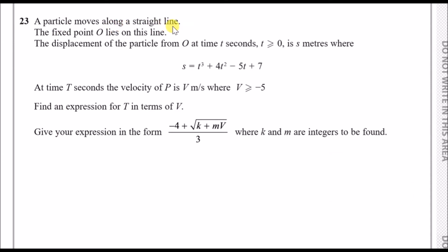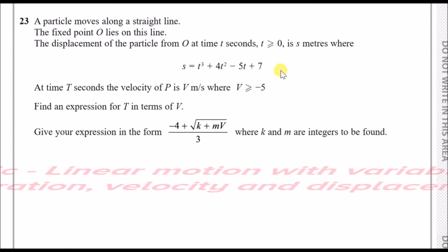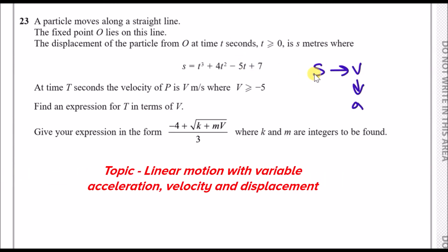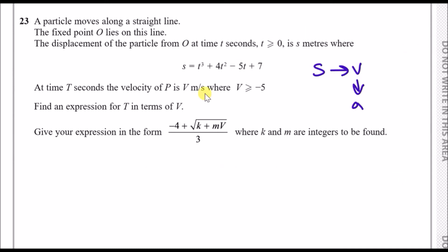A particle moves along a straight line. The fixed point O lies on this line. The displacement of the particle from O at time T seconds (T positive) is S metres, given by a cubic equation. At time T seconds, the velocity of P is V metres per second where V is greater than or equal to minus 5. For displacement, velocity, and acceleration questions involving S, V, and A, we use differentiation.